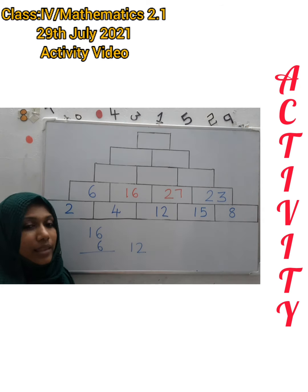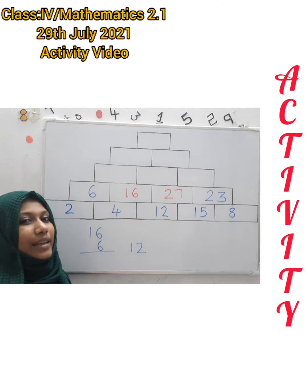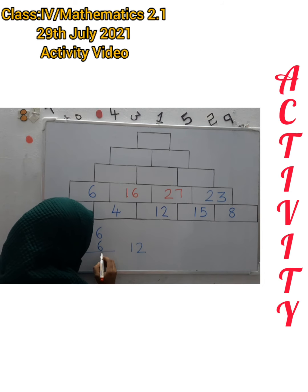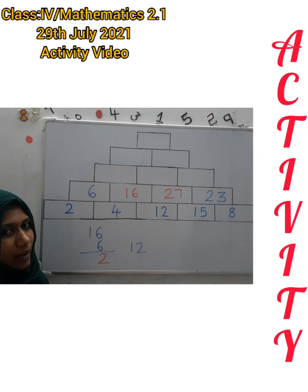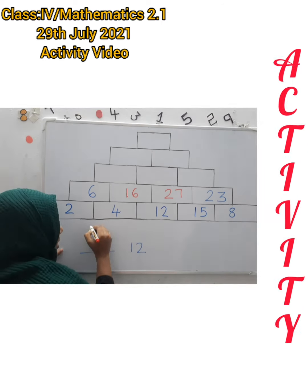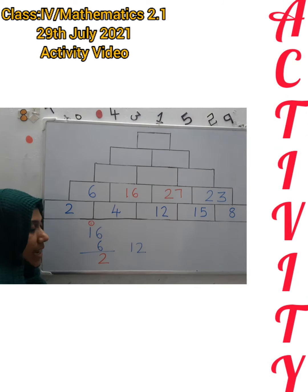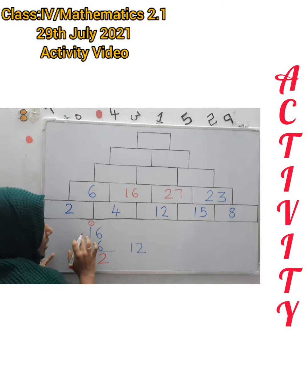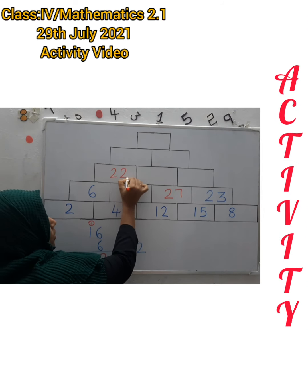The 1's place value of 12 is 2. So we write 2 below the 1's place column. Then the remaining 1 — we write it in the 10's place column. We arrange the 1's in a column, then 1 plus 1 is 2, so the answer is 22.